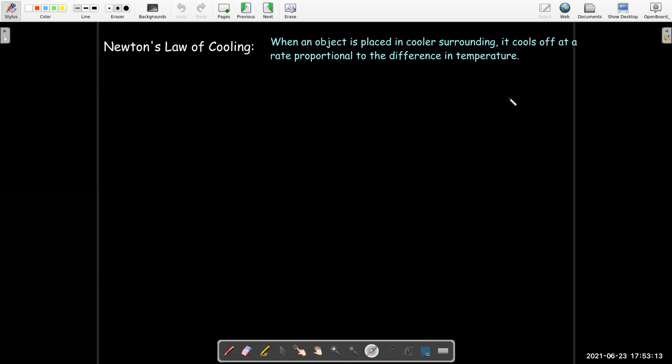In other words, if something that's very hot is put in room temperature, it's going to initially cool off very quickly. The temperature will go down relatively quickly, but then as you get closer and closer to the surrounding temperature, the rate of cooling decreases.